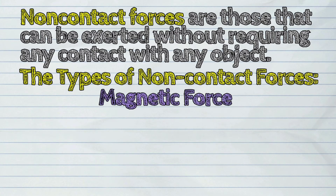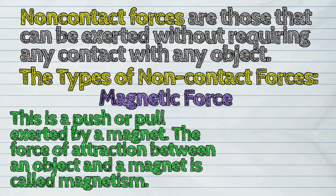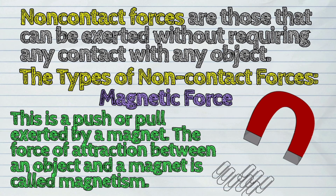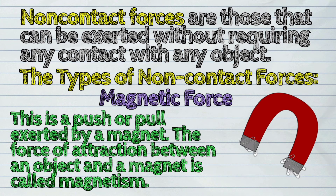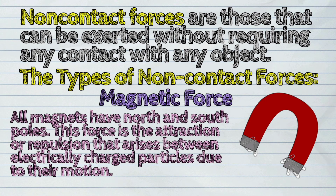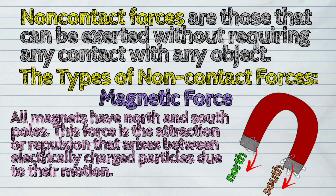Second, the magnetic force. This is a push or pull exerted by a magnet. The force of attraction between an object and a magnet is called magnetism. All magnets have north and south poles. This force is the attraction or repulsion that arises between electrically charged particles due to their motion.